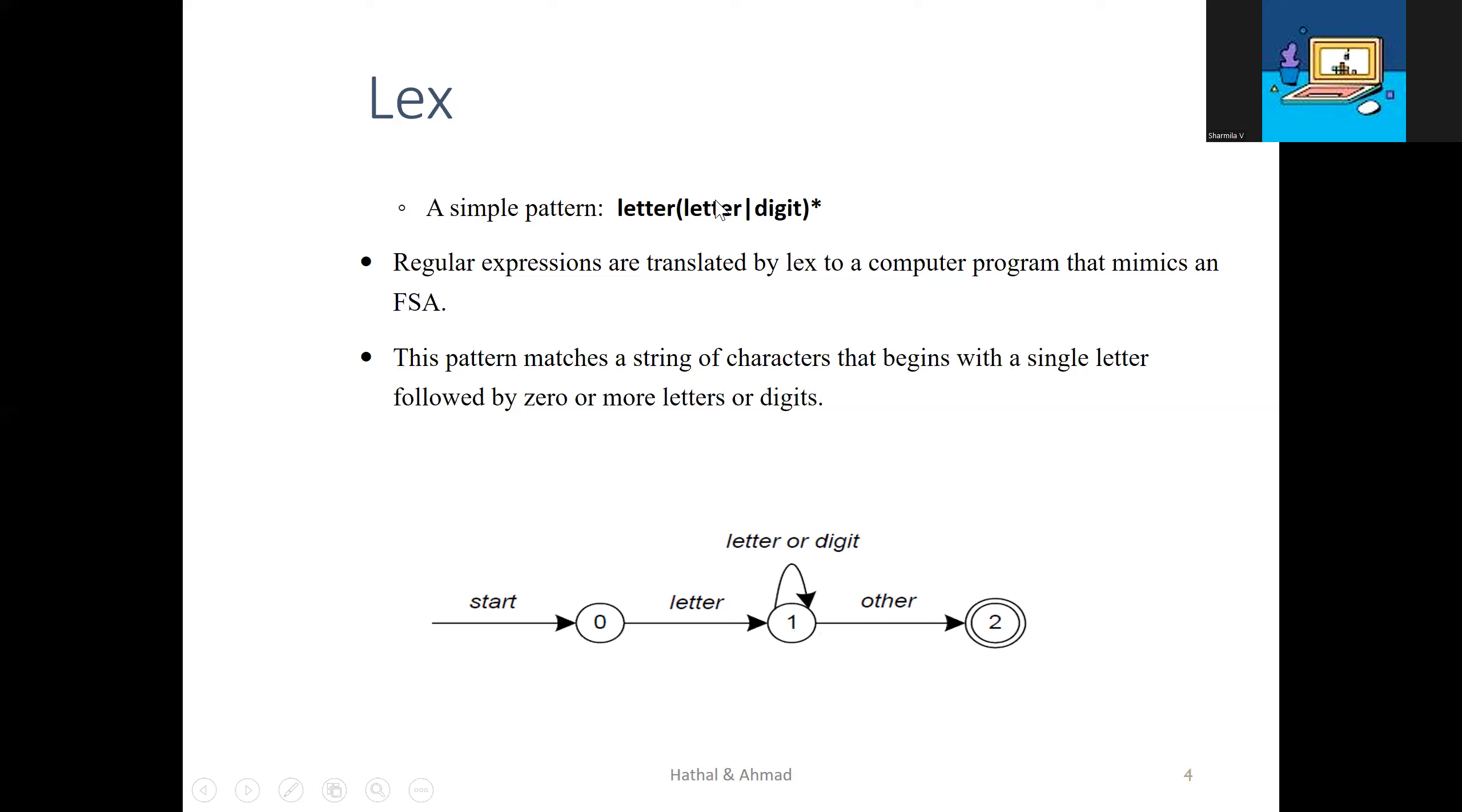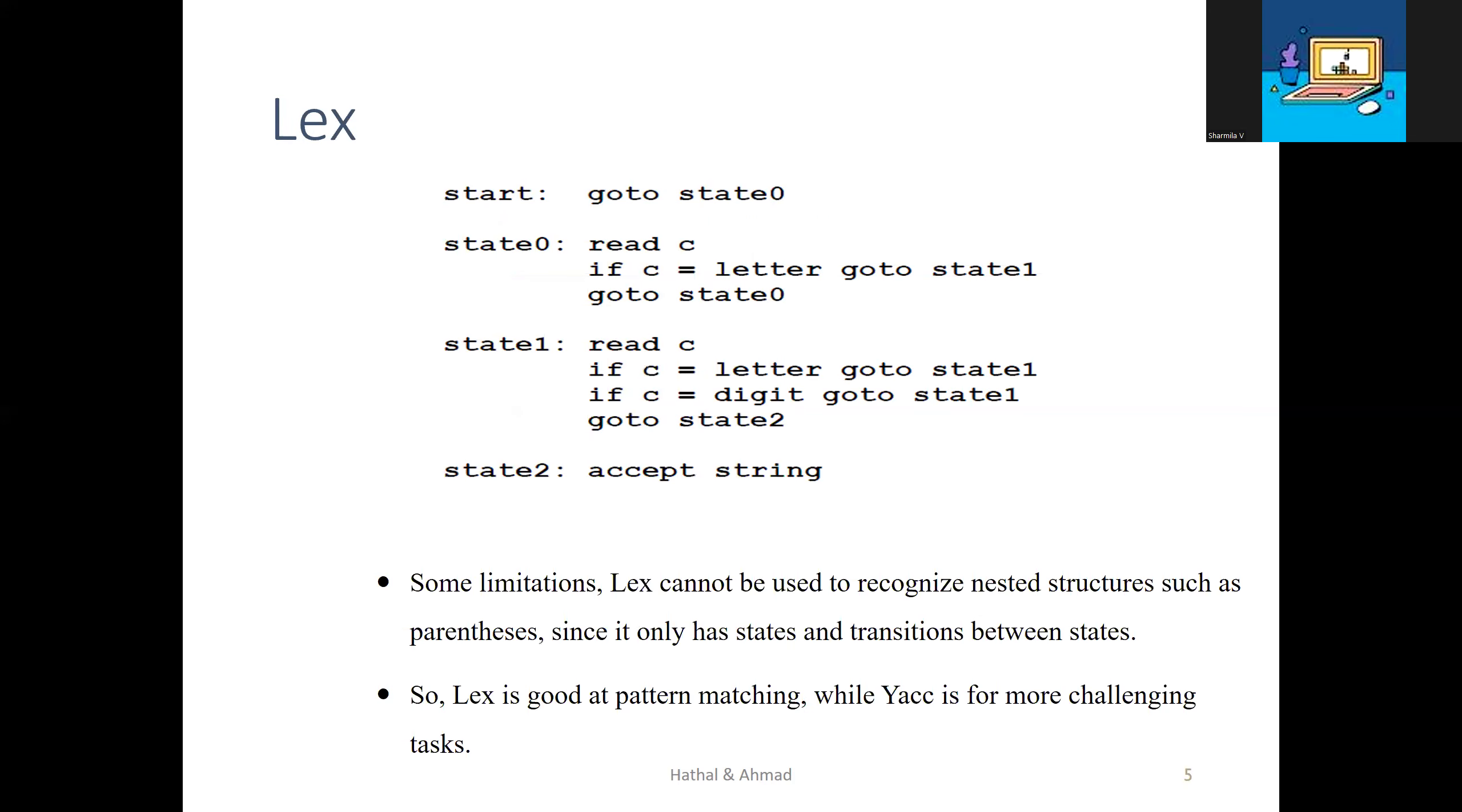A transition diagram starts with start state zero. First, one letter is mandatory. If it sees a letter or digit, it moves to state one. It repeatedly stays in state one while reading letters or digits. If it sees any other symbol like operators, it moves to the next state. State zero reads the letter, state one reads letters or digits, and state two is the accepting state.